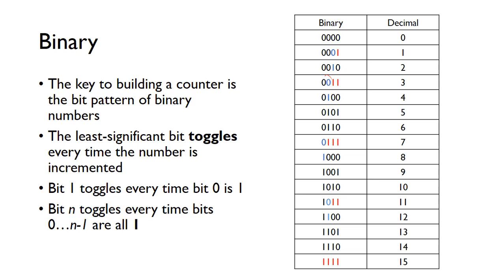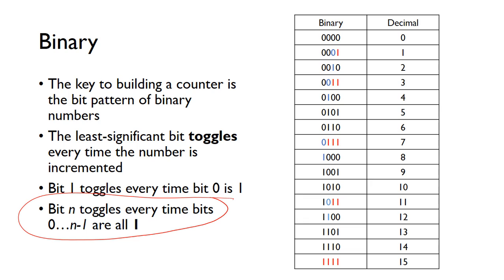Bit 2 toggles only when both bit 0 and bit 1 are a 1. Once it has toggled to a 1, it stays a 1 and only toggles back to 0 when both bit 0 and bit 1 are again 1. The same situation occurs for bit 3 — it toggles from 0 to 1 only when bit 0, bit 1, and bit 2 are all 1. This can be summarized as: bit n toggles every time bits 0 to n−1 are all 1.